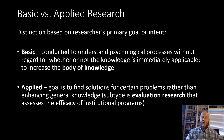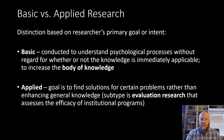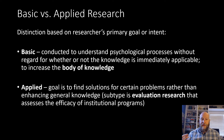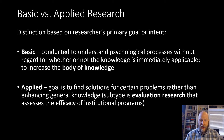Another way we can break up research into important categories is based upon the primary goal or intent of the researcher. Basic research is conducted in an attempt to understand psychological processes without regard for whether the knowledge is immediately applicable. It's just intended to increase the body of understanding on a subject — research for research's sake, for knowledge's sake alone. Applied research is where you are much more focused on finding solutions for specific problems, taking information and doing something with it.